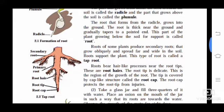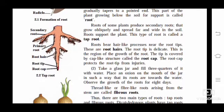Roots of some plants produce secondary roots that grow obliquely and spread far and wide in the soil. Roots support the plant. This type of root is called tap root - roots that support the plant and have secondary roots that spread in the soil.